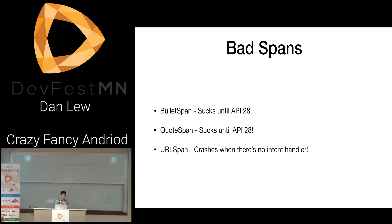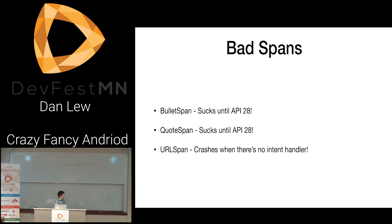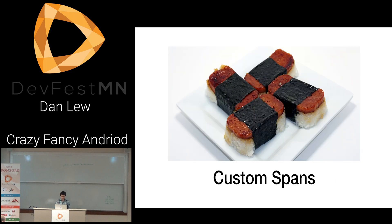The URLSpan has an issue: when you click it, it just calls startActivity with whatever intent data you passed. If there's no app to handle it, the Android OS will just crash. So when you're working on an app like Trello which lets people write whatever URL they want, people clicking those URLs would crash the Trello app.